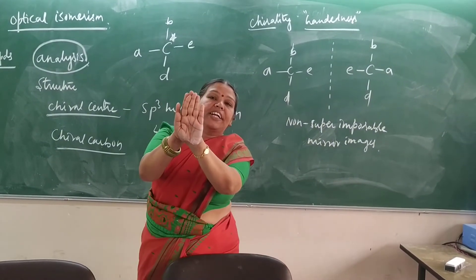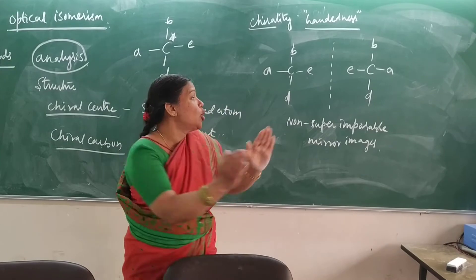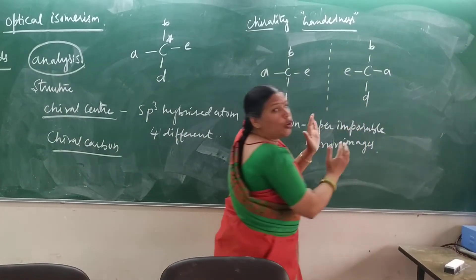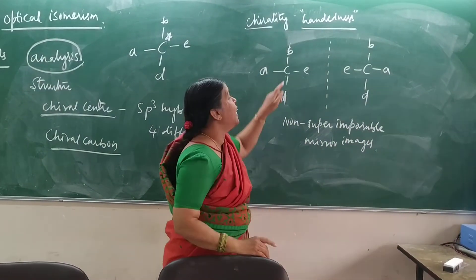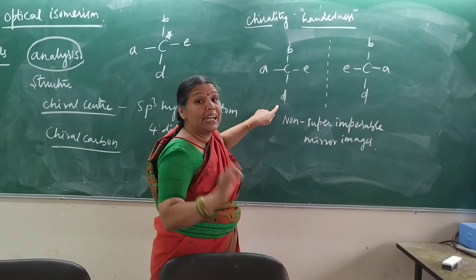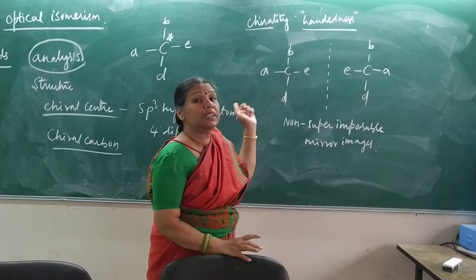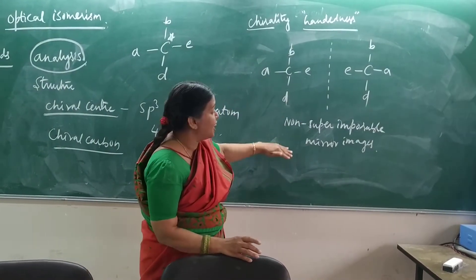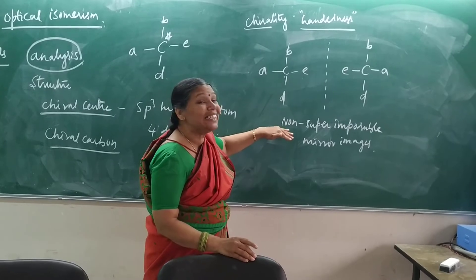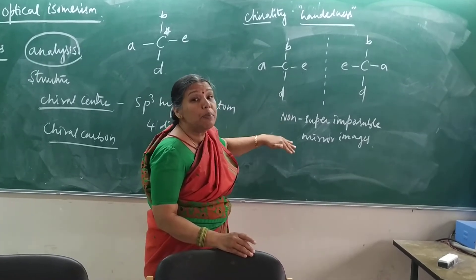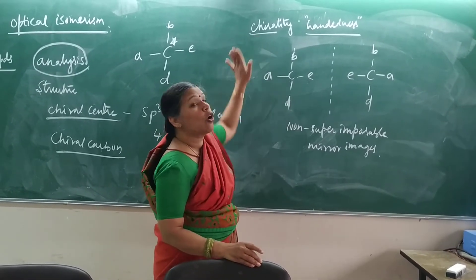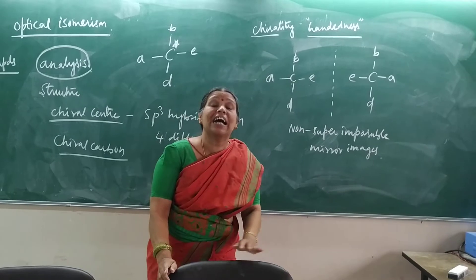So it is like handedness — a molecule like this and its mirror image: A and B are interchanged. Therefore I am going to call this non-superimposable mirror images, and that property we are going to call chirality.